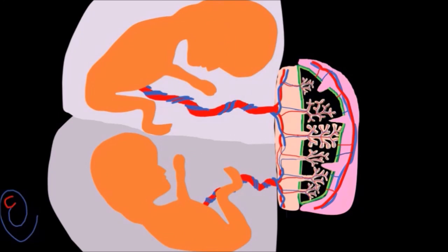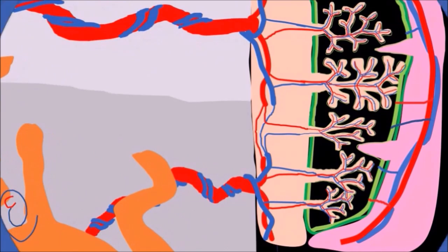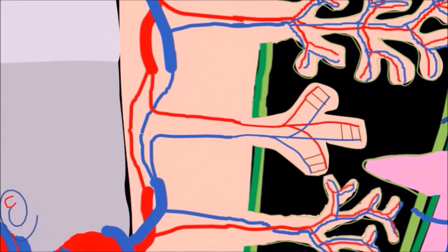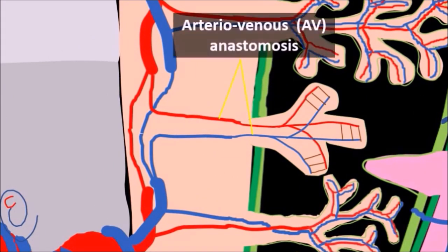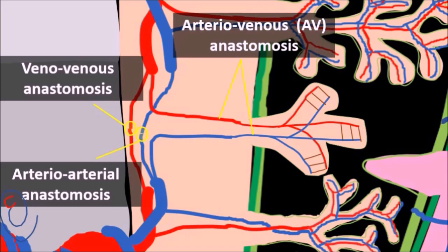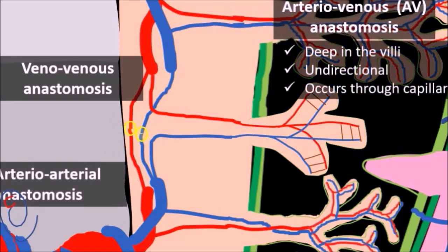And now what happens in monochorionic twins? Monochorionic means there is a single placenta and the two umbilical cords are connected to the same placenta. Normally, vascular connection occurs between the two fetuses inside the placenta. And there are three types of vascular anastomosis: number one is artery-to-vein anastomosis, number two is artery-to-artery, and number three is vein-to-vein. Arteriovenous anastomosis occurs deep inside the villi. They are unidirectional, meaning blood moves in one direction from artery to vein, and it occurs through a capillary bed.